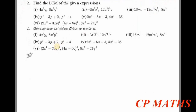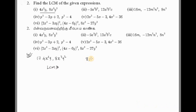For the first problem, we have to factorize and find the LCM of 4x²y and 8x³y². First, take the numbers: we have 4 and 8. The LCM of 4 and 8 — 4 goes once, 8 goes twice — so the LCM of the numbers is 8.